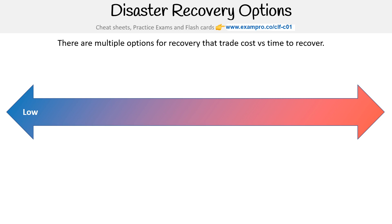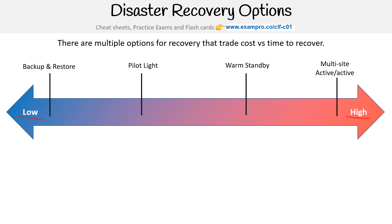We have a spectrum from low to high — or you could say cold to hot. On the left-hand side we have backup and restore, pilot light, warm standby, and multi-site active-active. Notice we're using words like pilot light and warm that relate to temperature, so again: cold and hot.